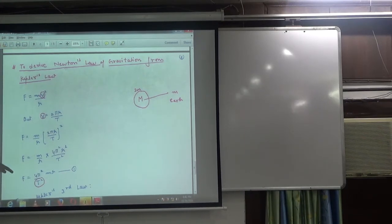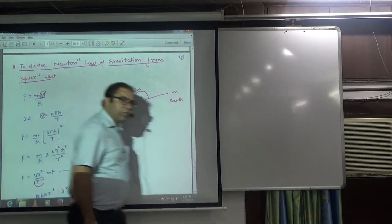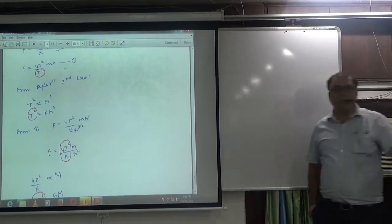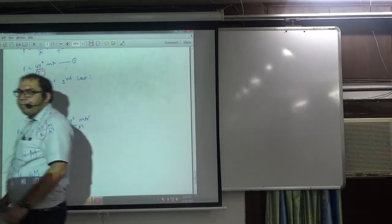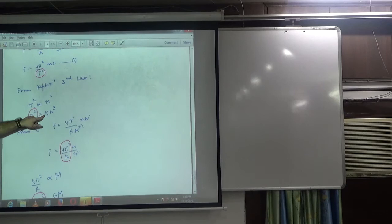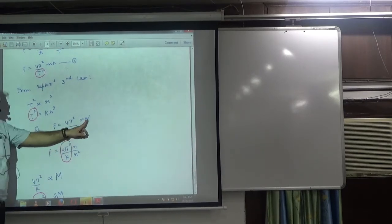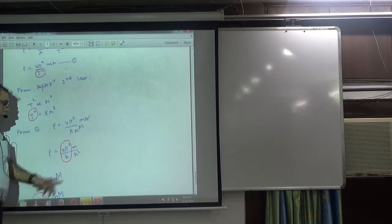Now we use Kepler's third law: T² is proportional to R³. So T² = KR³, where K is a constant. Substituting this, the T² in the denominator becomes KR³. The R³ and R cancel, leaving R² in the denominator.